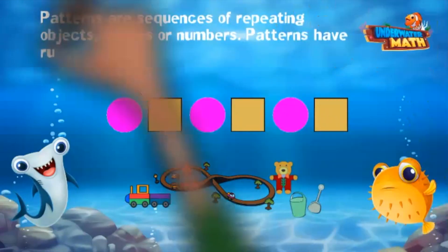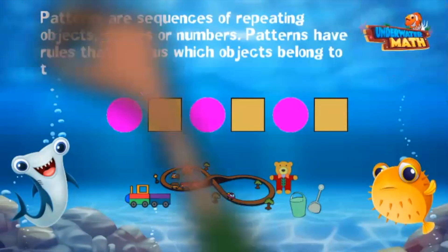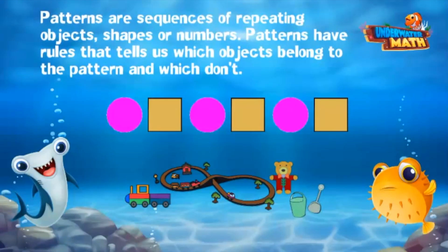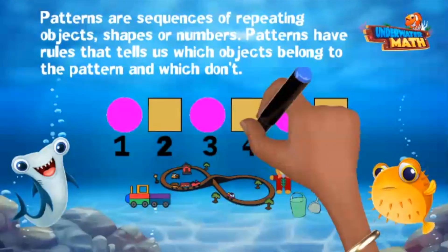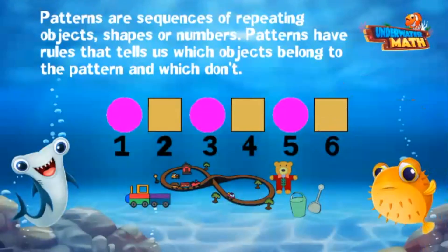Patterns are sequences of repeating objects, shapes, or numbers. Patterns have rules that tell us which objects belong to the pattern and which don't. Let's look at the first pattern I made. Here it is. It's made up of circles and squares.